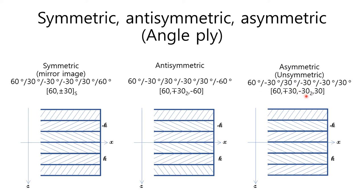Asymmetric laminate has the same meaning as unsymmetric laminate. There is no rule for stacking sequence for layers in the asymmetric laminate. All laminates except for symmetric and antisymmetric are asymmetric. The laminate code for this picture is 60, plus minus 30, double minus 30, and 30.